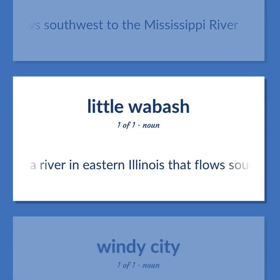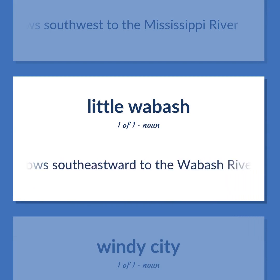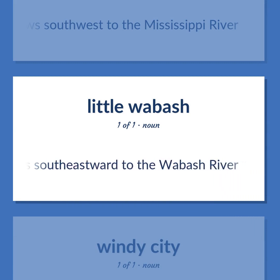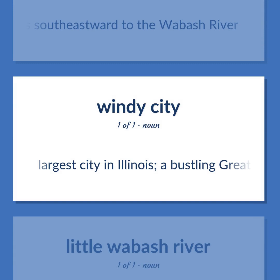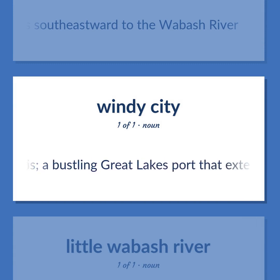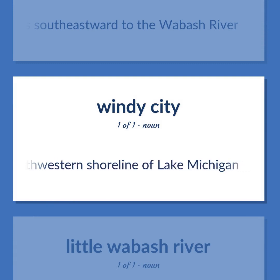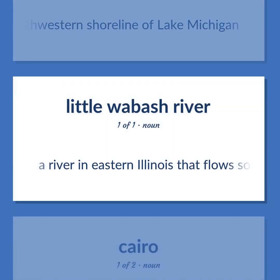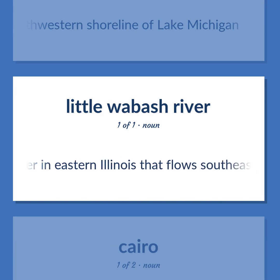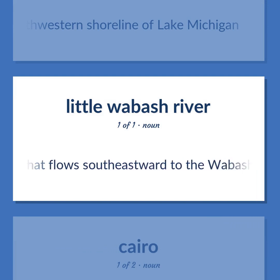The Vermilion River: A river in eastern Illinois that flows southeastward to the Wabash River. Chicago: Largest city in Illinois, a bustling Great Lakes port that extends 26 miles along the southwestern shoreline of Lake Michigan. The Vermilion River: A river in eastern Illinois that flows southeastward to the Wabash River.